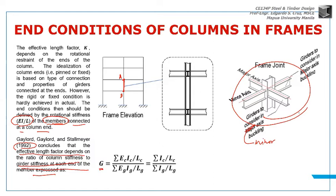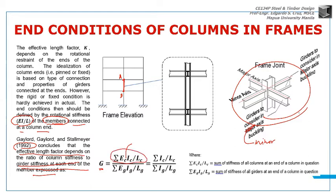What is G? G is the ratio of the stiffnesses of the column. This is the numerator: summation of stiffnesses of columns. The denominator is the summation of stiffnesses of girders - the girders or beams connected to that joint, on that plane of axis.